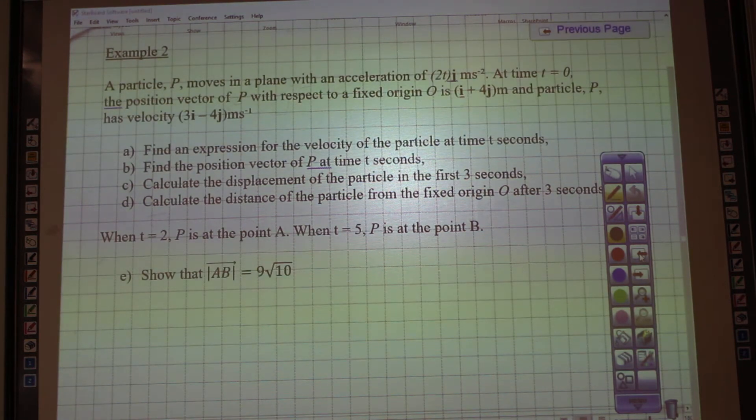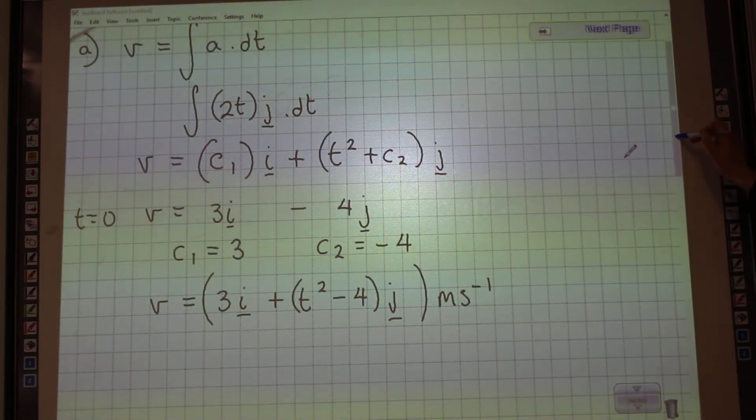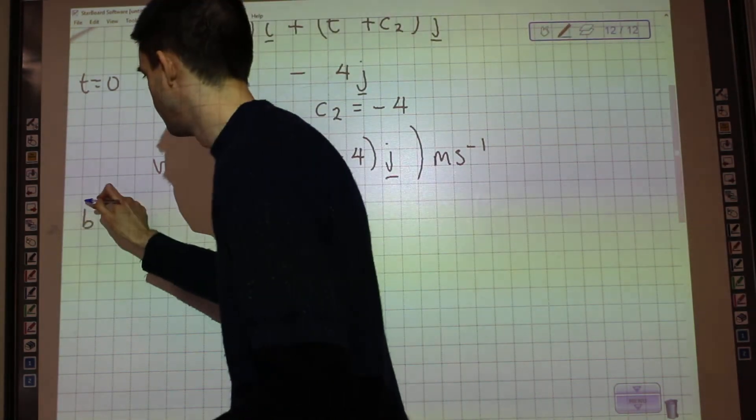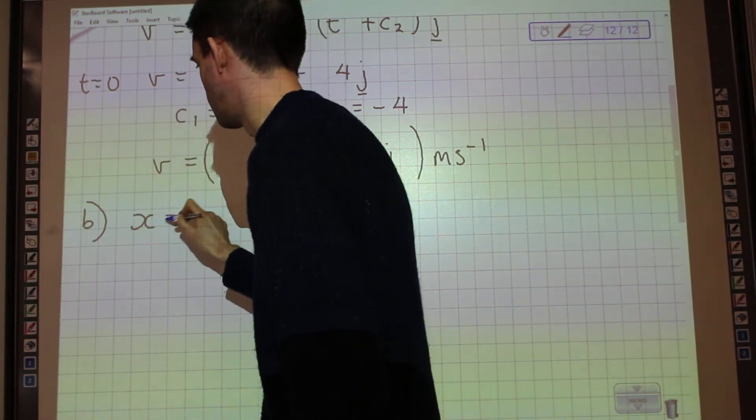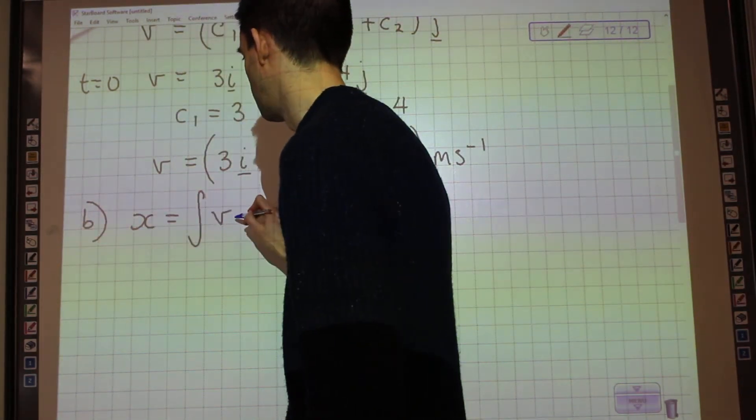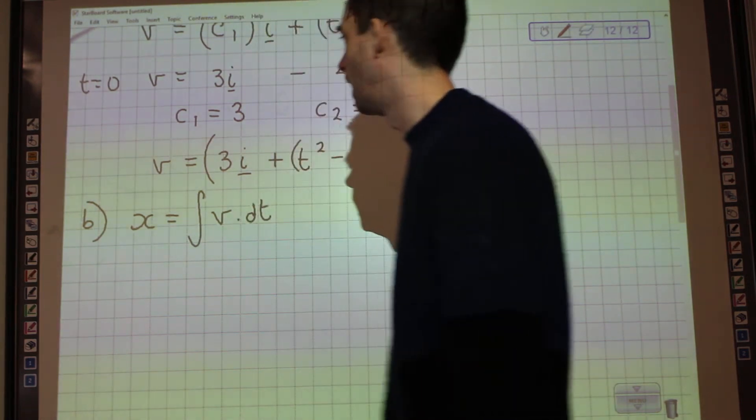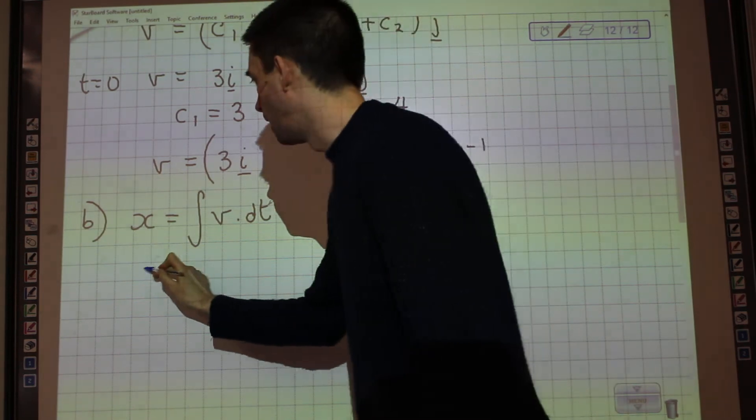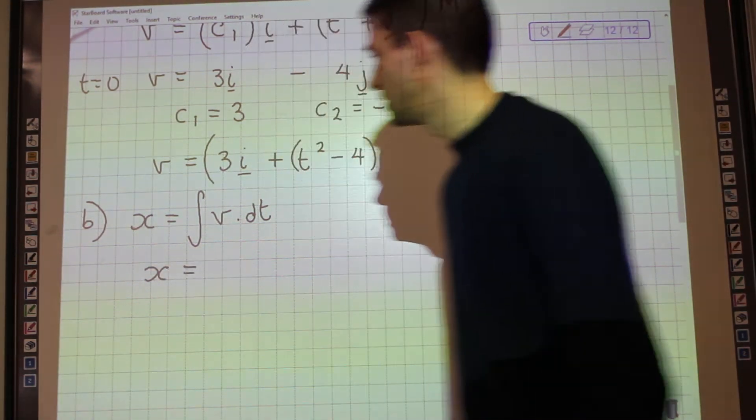So for the next bit, find the position vector of p at time t seconds. So for position vector, we're going to be integrating the velocity. So position vector, which I call x, is the integral of velocity with respect to t. So if I integrate the i's and the j components separately here.